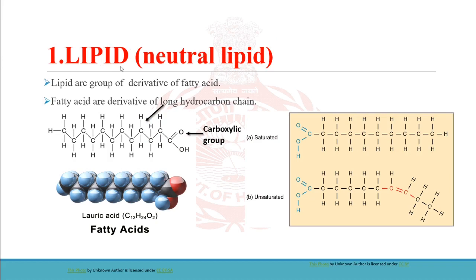The first component is the lipid component. Lipids are a group of derivatives of fatty acids. Fatty acids are derivatives of a long hydrocarbon chain. In the structure of fatty acid, you can see there is only carbon and hydrogen — the whole structure is made up of only carbon and hydrogen, having a carboxylic group at one end. There are two types of fatty acid: saturated and unsaturated.